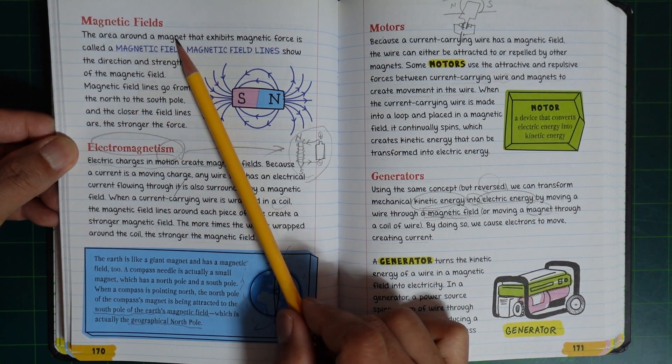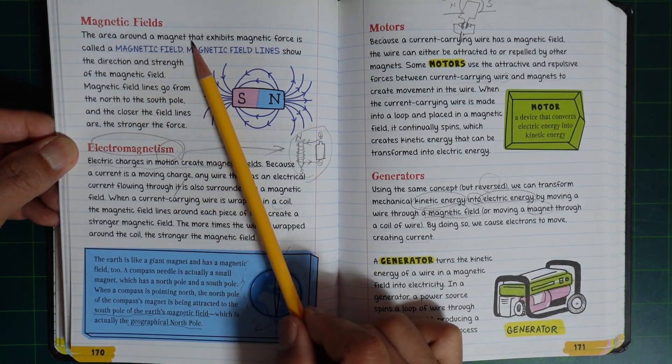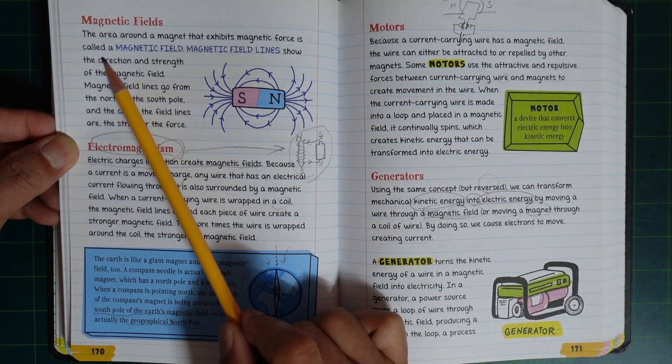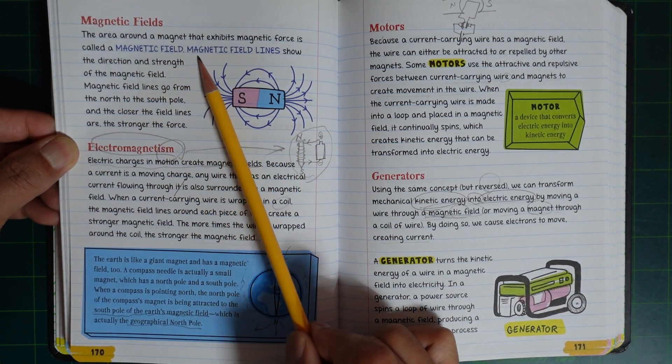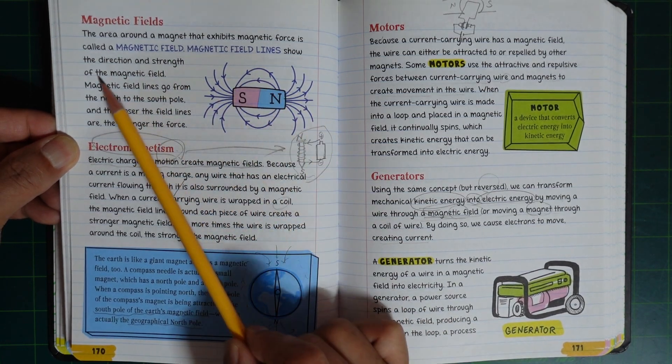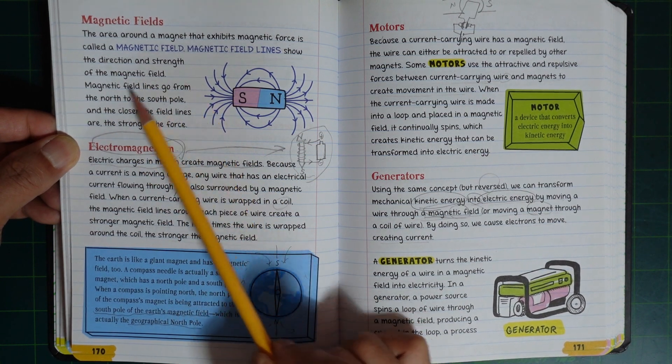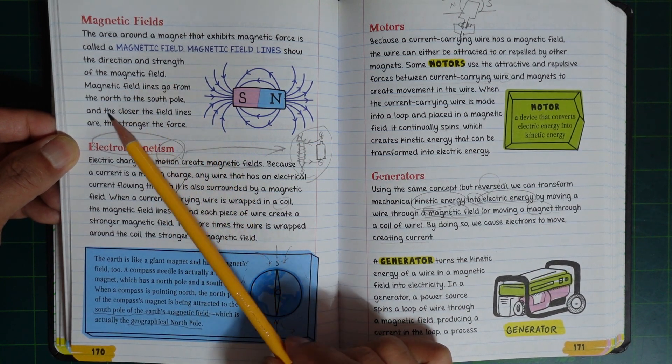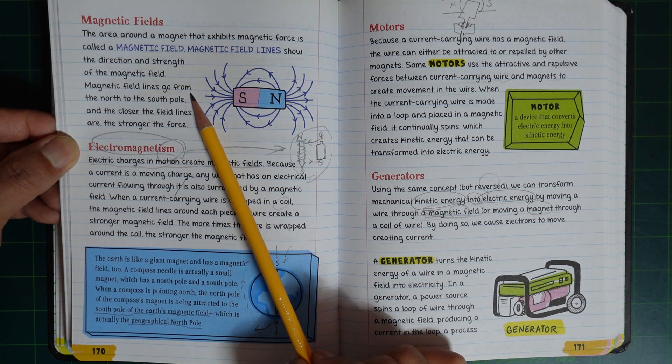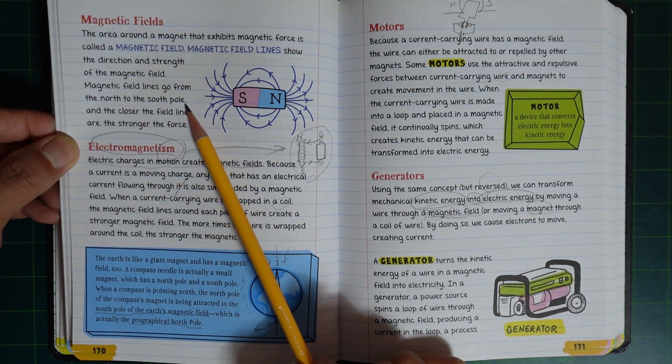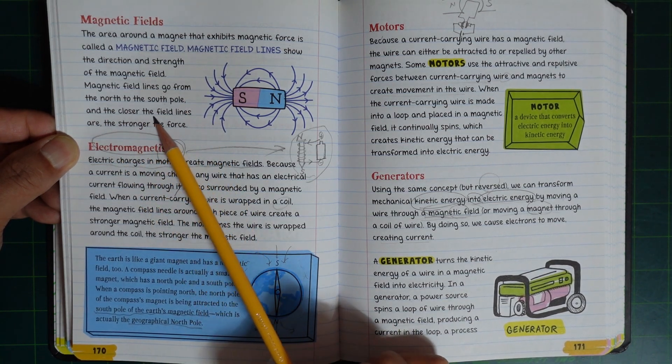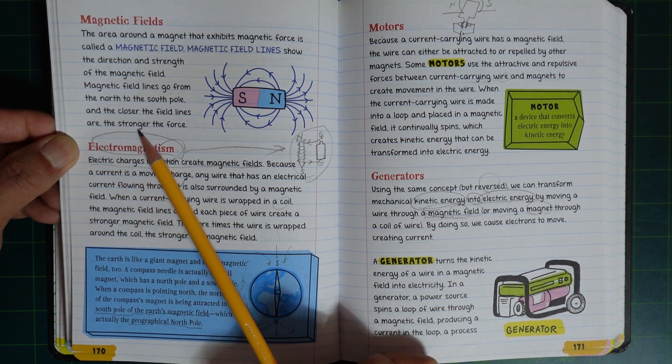An area around a magnet that exhibits magnetic force is called a magnetic field. Magnetic field lines show the direction and strength of the magnetic field. Magnetic field lines go from the north to the south pole, and the closer the field lines are, the stronger the force.